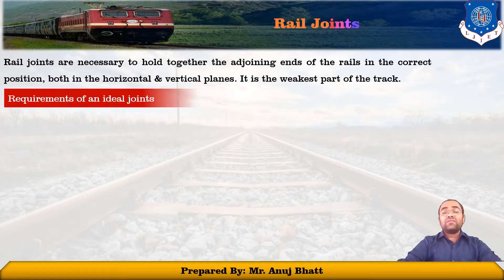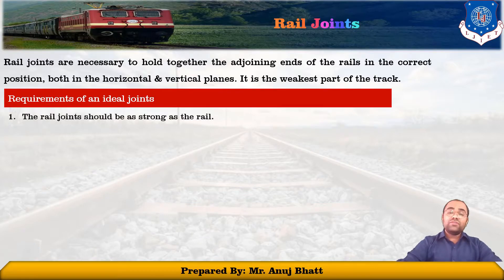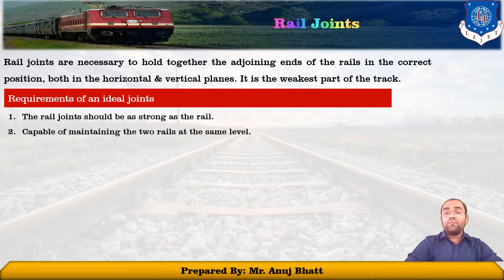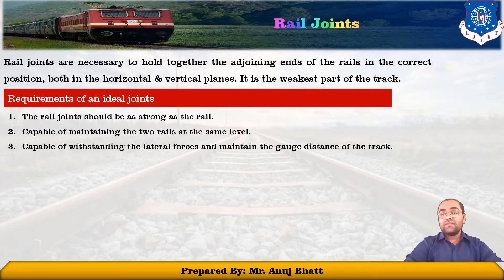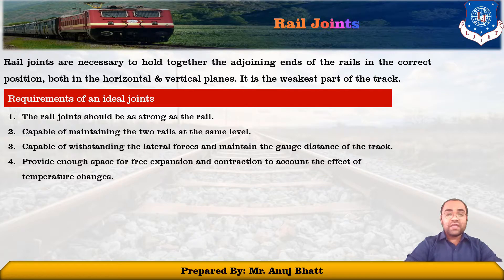Let's see what are the requirements of an ideal joint. The rail joint should be as strong as the rail. It should be capable of maintaining the two rails at the same level. It should be capable of withstanding the lateral force and also maintaining the gauge distance of the track. That joint should provide enough space for expansion and contraction.